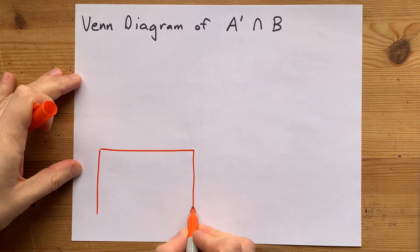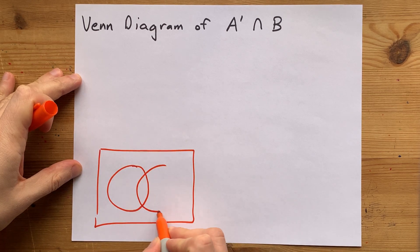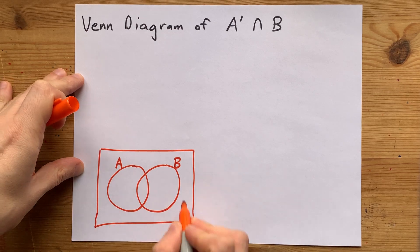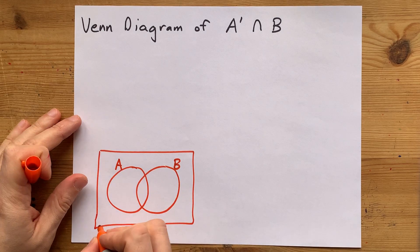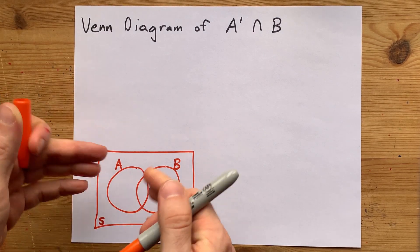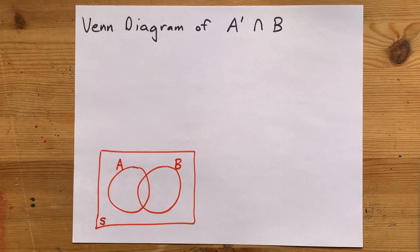Now just before we get started, I'm going to draw you a generic two-section Venn diagram. Here's section A, here's section B. And this outer bit is meant to be stuff that's not A or B. Some teachers call that S for sample space, others call it U for the universe. Whichever way your teacher does it is probably the way you should do it.